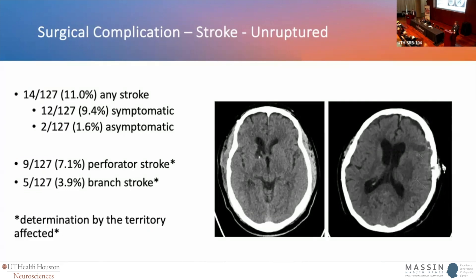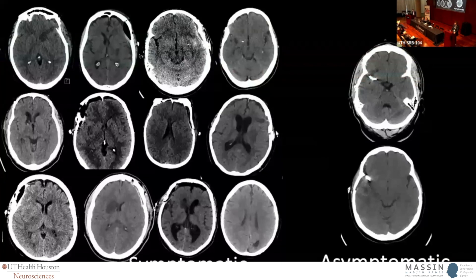There are a couple of other stroke etiologies that were a little less clear — they were in branches or further down the territory. Mind you, most of these patients don't undergo imaging when they're asymptomatic. Only a small number have imaging unrelated to their neurologic presentation — some done two months later because the patient presents with, say, head trauma.